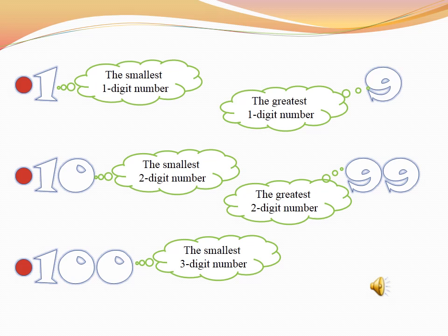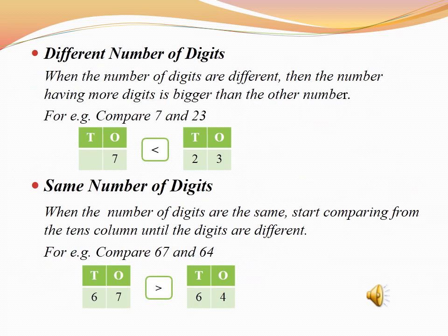So let's move on to the next topic. Now, if you want to compare numbers, there are two ways. The first one is: different number of digits. When the number of digits are different, the number having more digits is bigger than the other numbers.